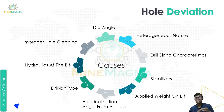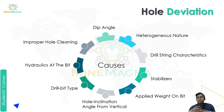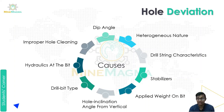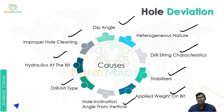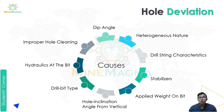Additional causes are improper hydraulics at the bit and improper hole cleaning during the process. If flushing is not proper and the hole is not clean, the hole can deviate. In summary, the causes of hole deviation are: dip angle, heterogeneous nature, drill string characteristics, stabilizers, applied weight on bit, hole inclination angle from vertical, drill bit type, hydraulics at the bit, and improper hole cleaning.